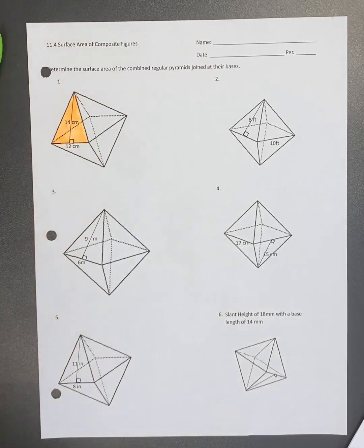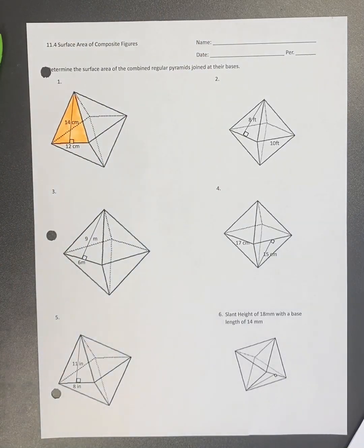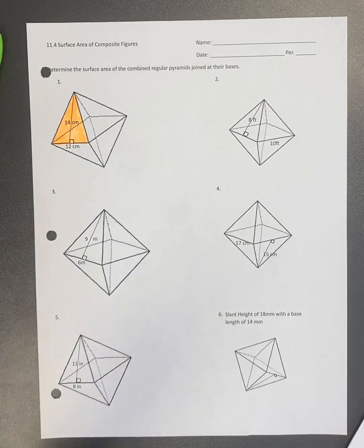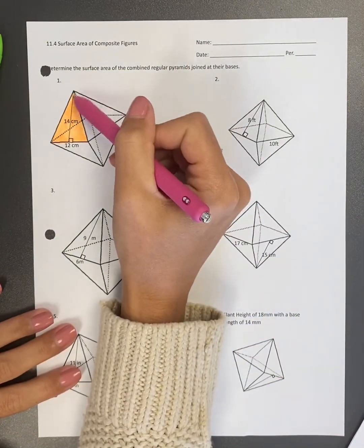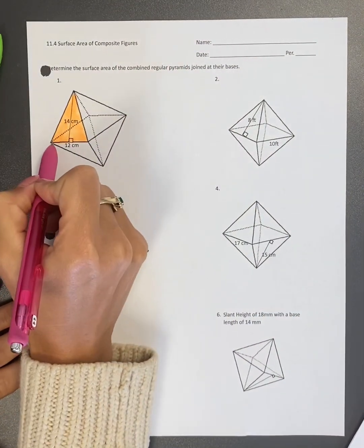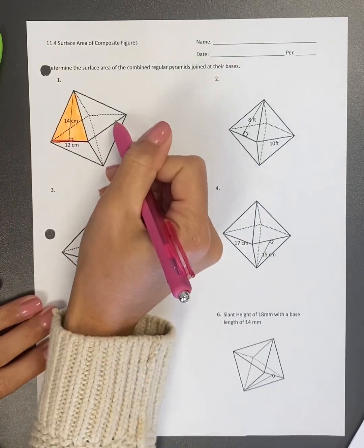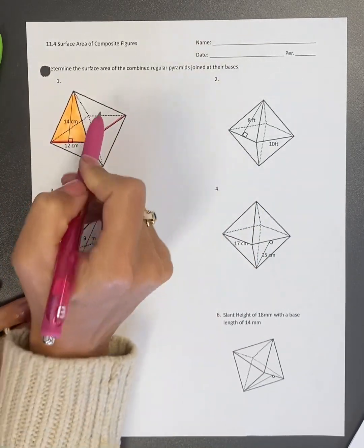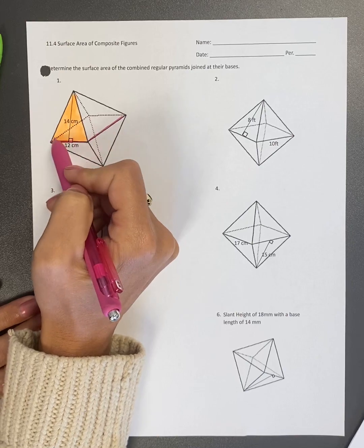So we are going to find the surface or we're going to find the area of each side and then we're going to just add them all together. So basically, because it's a square base pyramid, that means that this length is 12, this length is 12, the back side is 12, this side is 12.